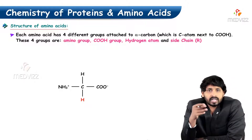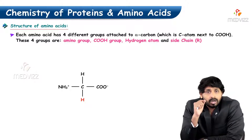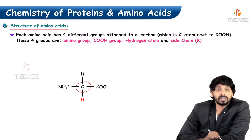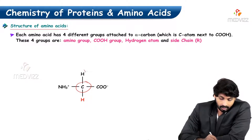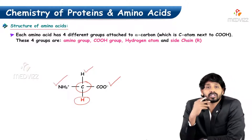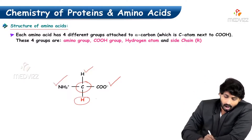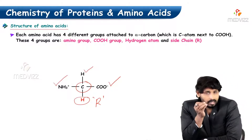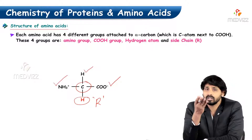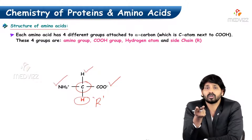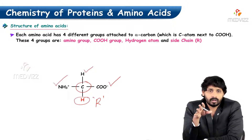Coming to the structure of amino acids: each amino acid has four different groups attached to an alpha carbon. As shown in the slide, the alpha carbon is surrounded by hydrogen, an amino group, a carboxyl group, and an R group — where R indicates the functional group that varies between amino acids. If two hydrogens are present instead of a unique R group, the carbon is not asymmetric.